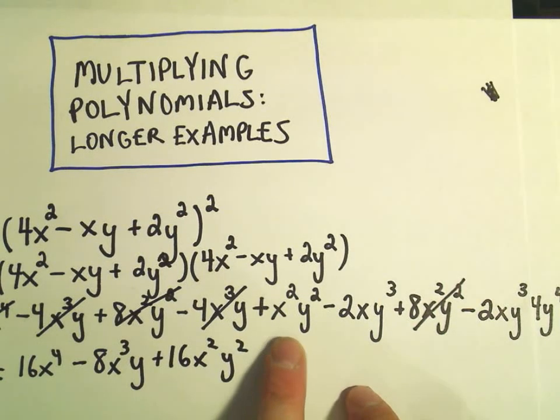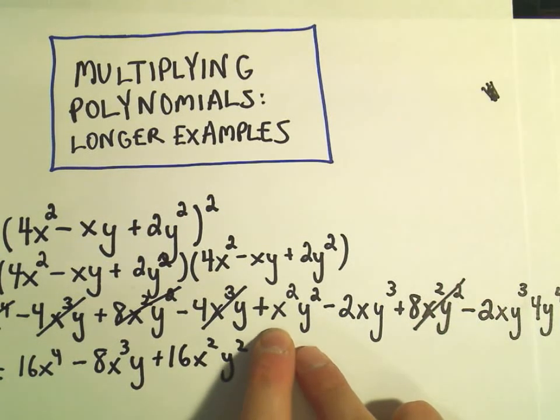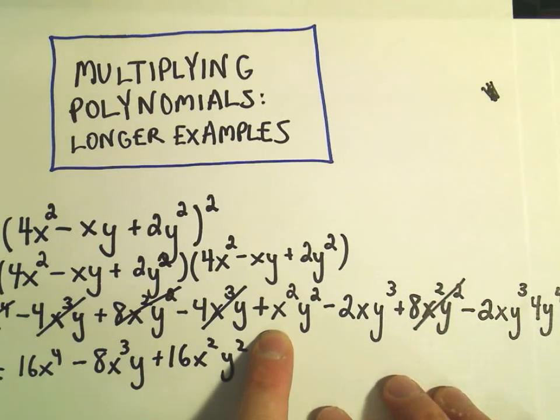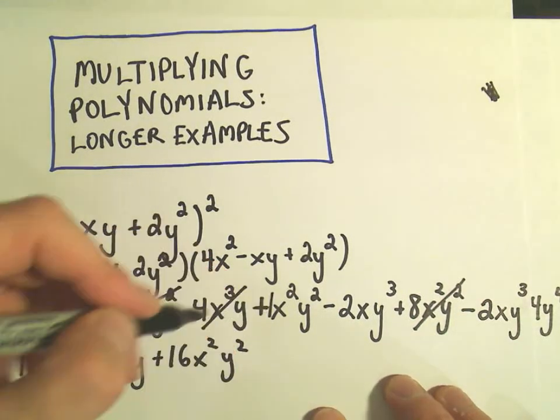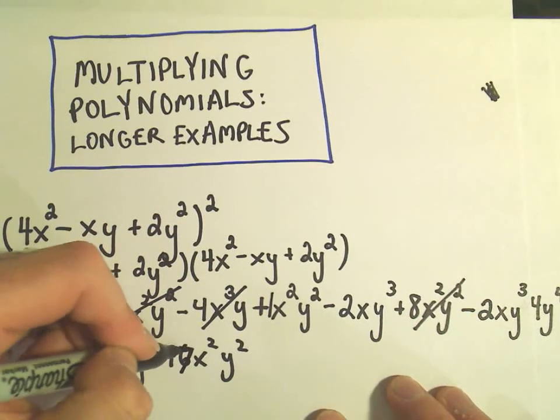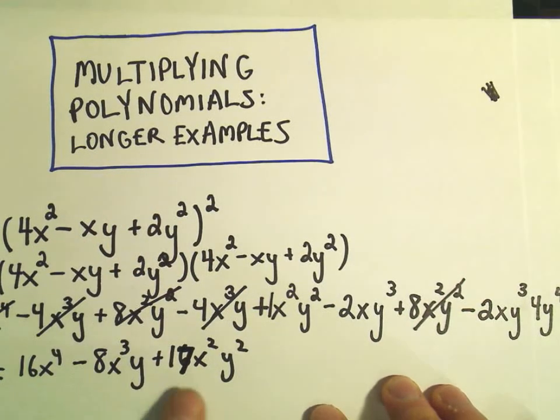Oh, it looks like we've actually got another positive 1x²y² in there that I overlooked. So this is why I like to cross them out in case I miss them. So if we add that extra 1 instead of a 16, we should actually have 17x²y². So let me cancel that one out as well.